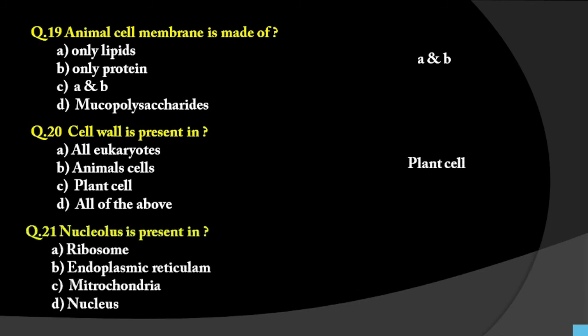Question number 21: Nucleolus is present in what — ribosome, endoplasmic reticulum, mitochondria, or nucleus? The answer is nucleus because the nucleolus is present inside the nucleus.